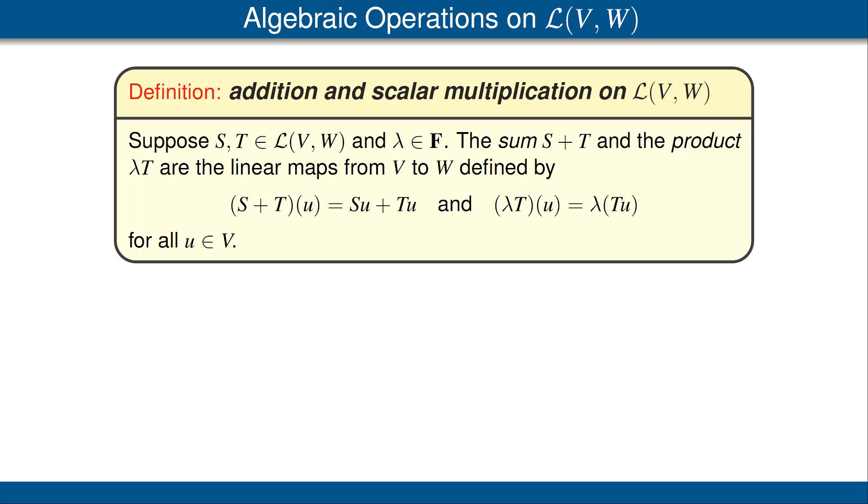Now we want to define an addition and a scalar multiplication on the set L(V,W), which is the set of linear maps from V to W. We do that in the obvious way. Specifically, if S and T are linear maps from V to W, then we define S plus T to be the function from V to W whose value at u is S(u) plus T(u). Furthermore, if lambda is a constant, we define lambda T to be the function from V to W whose value at u is lambda times T(u). With these definitions, it's easy to verify that S plus T and lambda T are both linear maps from V to W.